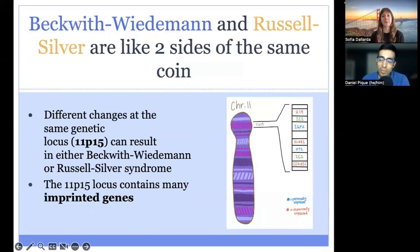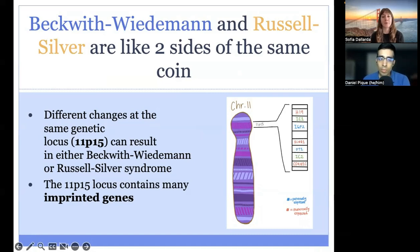Just like with the first imprinting lecture, we will be presenting two conditions in this lecture: Beckwith-Wiedemann syndrome and Russell-Silver syndrome. We're presenting these two conditions because different changes at the same imprinted region, which is 11p15, can result in either Beckwith-Wiedemann or Russell-Silver. On the right in this slide is a simplified schematic of this region, and we will take a closer look at this region in just a few slides.